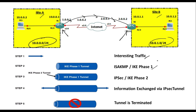Phase 1 is also called IKE Phase 1 or ISAKMP — Internet Security Association Key Management Protocol. Under the protection of Phase 1, the Phase 2 tunnel is established, also called IKE Phase 2 or the actual IPSec tunnel. In step 4, the actual exchange of information happens within the protection of the IKE Phase 2 tunnel, and once communication is done, the tunnel is terminated.